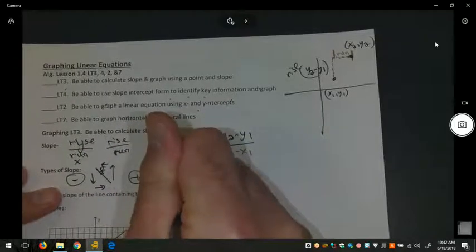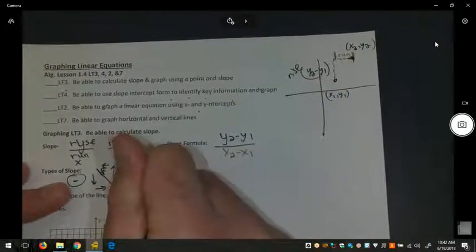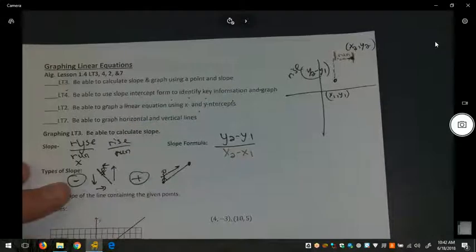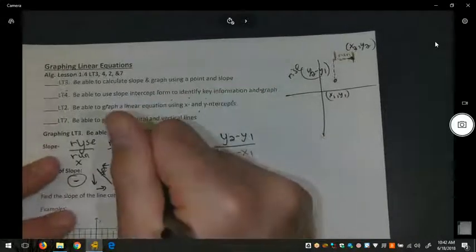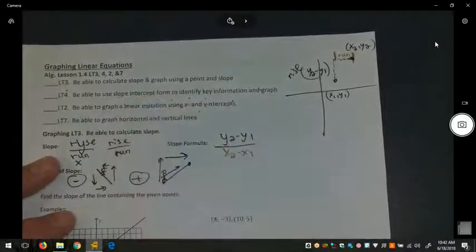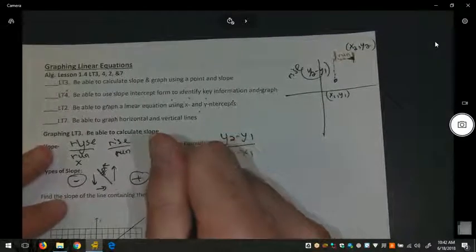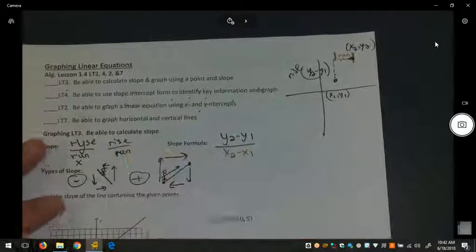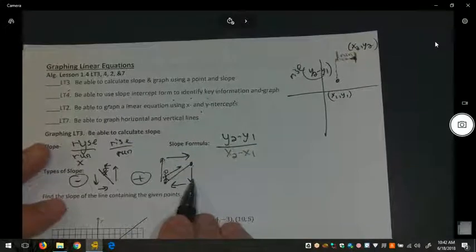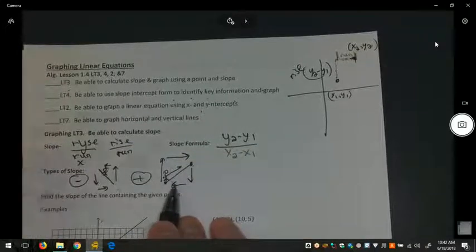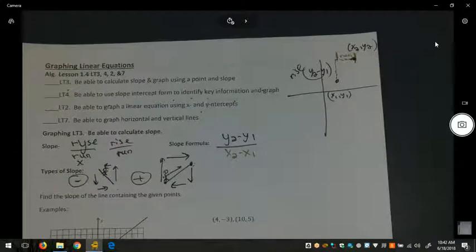You can have a positive slope between two points, where if we're walking from left to right, we're going up the hill. So we go up and right. Or if we started up here, we could go down and left. And that double negative, the negative of down and the negative of left, would divide to a positive.